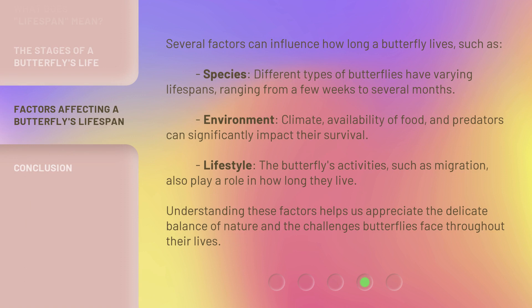Several factors can influence how long a butterfly lives. Species: different types of butterflies have varying lifespans, ranging from a few weeks to several months. Environment and climate: availability of food and predators can significantly impact their survival. Lifestyle: the butterfly's activities, such as migration, also play a role in how long they live. Understanding these factors helps us appreciate the delicate balance of nature and the challenges butterflies face throughout their lives.